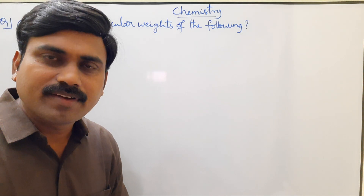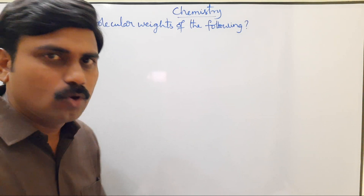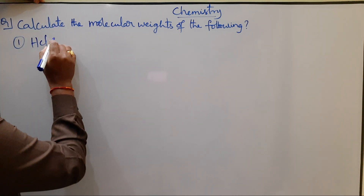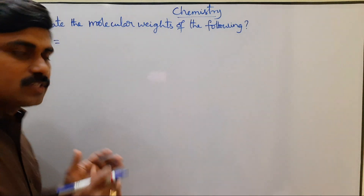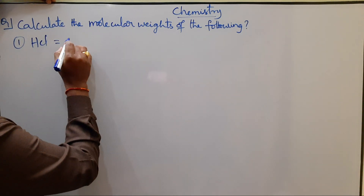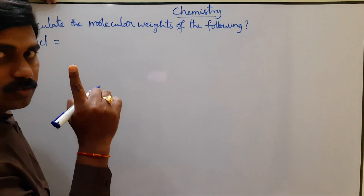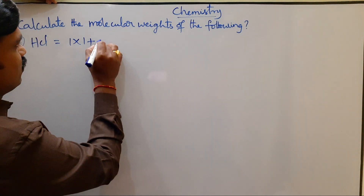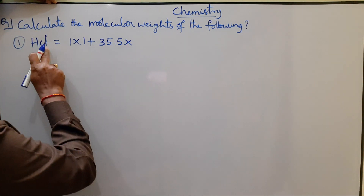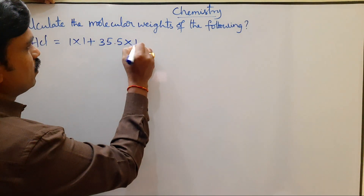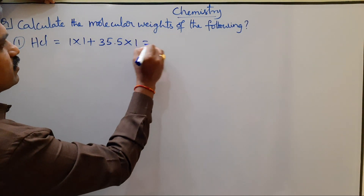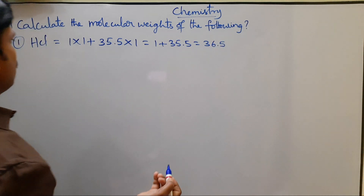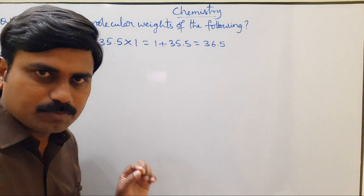How to calculate the molecular weights of chemical compounds. Look at the first one: Hydrochloric acid, HCl. For calculating the molecular weight of HCl, first take how many hydrogen atoms there are — one hydrogen, atomic weight one. So 1 × 1, plus Chlorine atomic weight 35.5 × 1. That gives 1 plus 35.5 equal to 36.5. So the molecular weight of hydrochloric acid is 36.5.